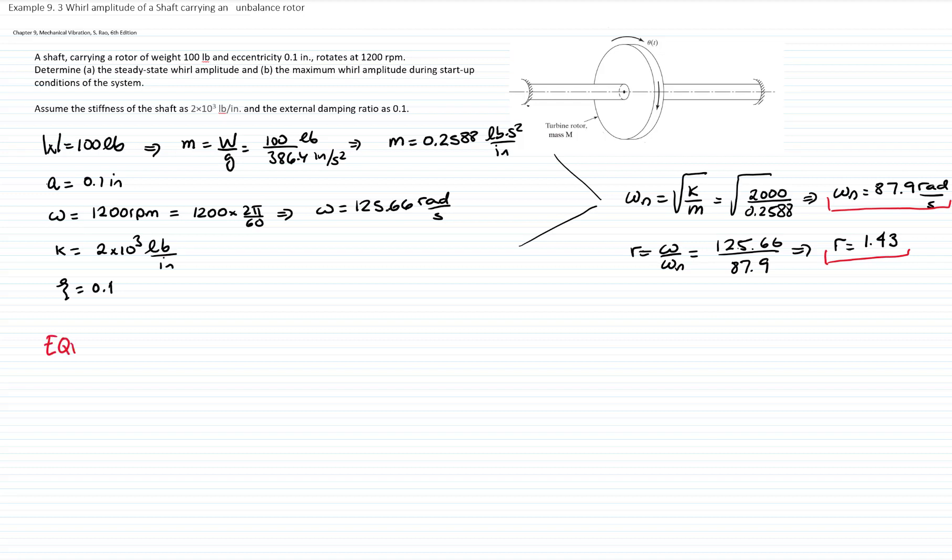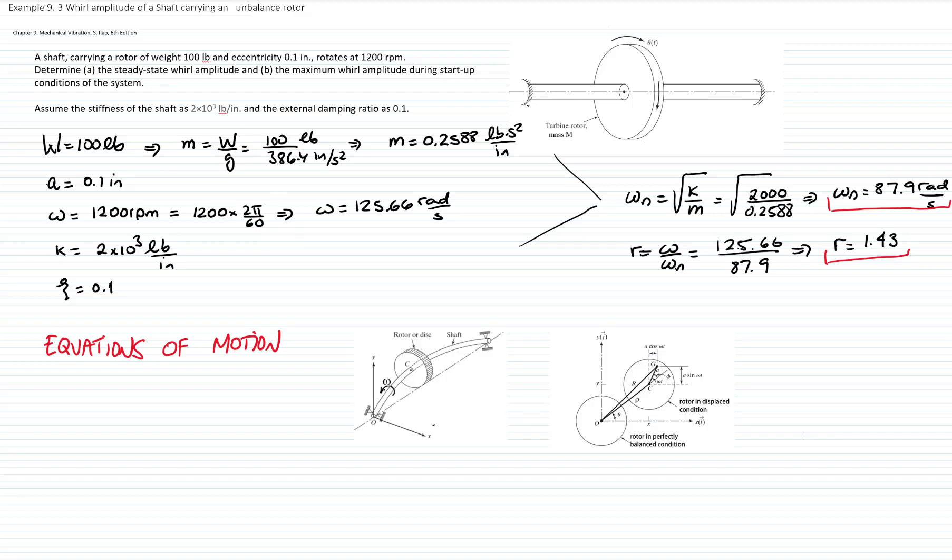Now, let's recall the equations of motion from the theory that we did in our narrated lecture. Let me recall those two figures that help us to get the equations of motion, and I will get an equation of motion for the x-direction, which is m x double dot plus c x dot plus k x equals ma ω² cosine ωt. And then one very similar for y-direction, but is sine of ωt.